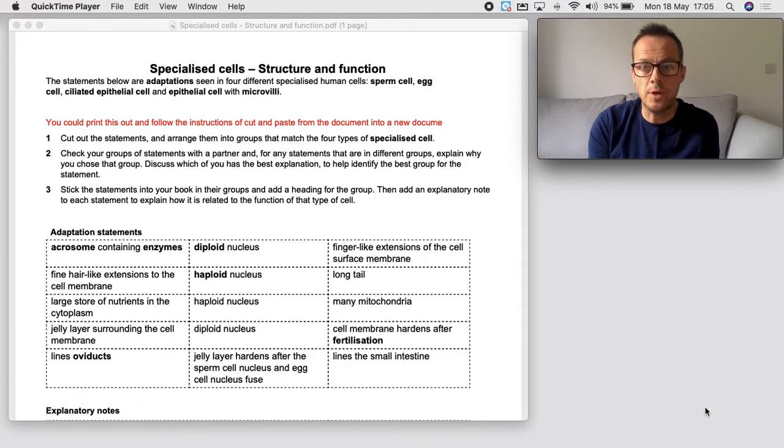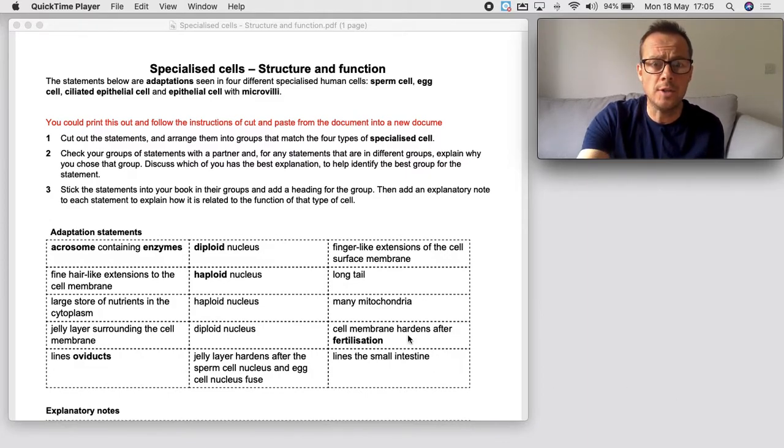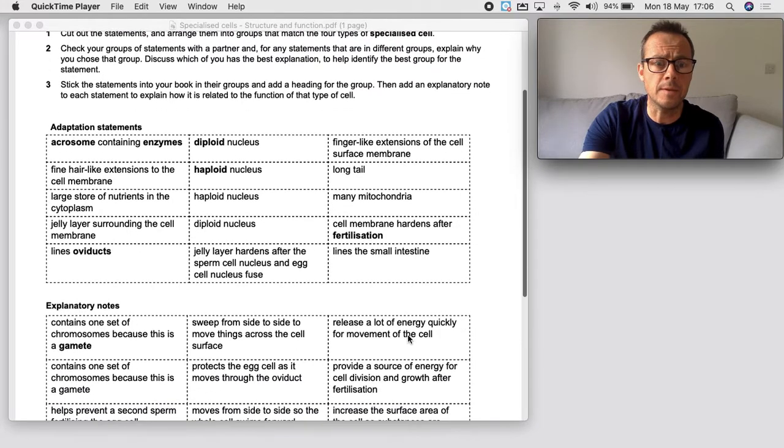So you don't have to print this document out. I've put this in red at the top of the worksheet. So if you do want to just cut and stick virtually and move it from one document to the other, you can. But what's important is you can identify the adaptation statements, link it to the correct cell and then explain why it has those things. So if we just have a look at this first one here.